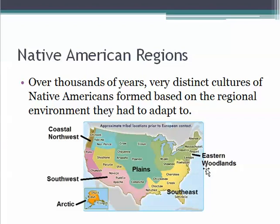You can see from this map that some of the regions included the Eastern Woodlands, the Southeast, the Great Plains, the Southwest, the Pacific Northwest, and the Arctic region.